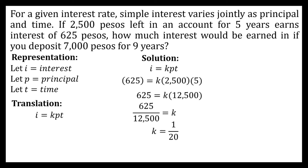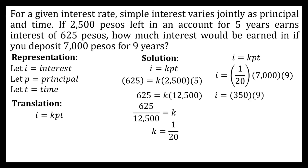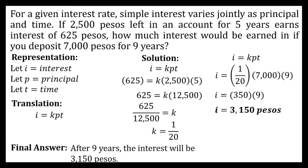Now using the constant of variation, we can find the interest earned by depositing 7000 pesos for nine years. Using the same equation and substituting: I is equal to 1 over 20 times 7000 times 9. Simplifying, we get 350 times 9, giving us an interest of 3,150 pesos. So after nine years, the interest will be 3,150 pesos.